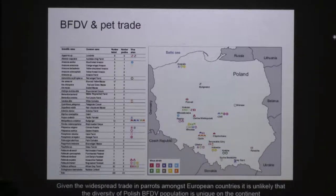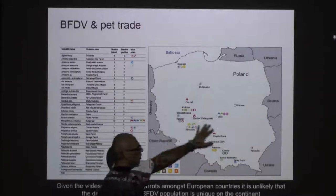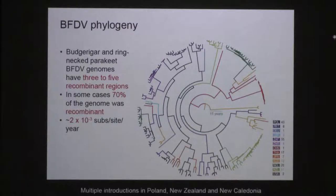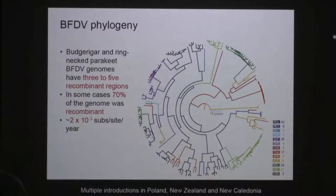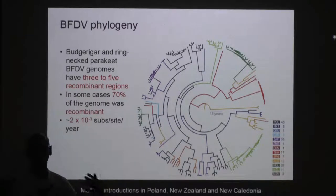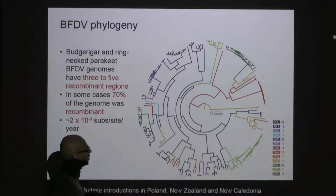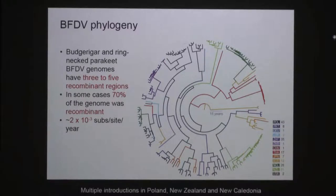We did a study in Poland looking at breeding facilities — they're full of these viruses, which are recombining and evolving. I can go to New Caledonia and tell a breeder, from phylogenetic analysis, that they bought a pair of breeding eclectus parrots from Europe — and I can pinpoint exactly where. Once we have full genomes we can look at introductions of diseases into new environments. For example, in New Zealand we've found two different introductions of this virus, and in New Caledonia there have been multiple introductions.